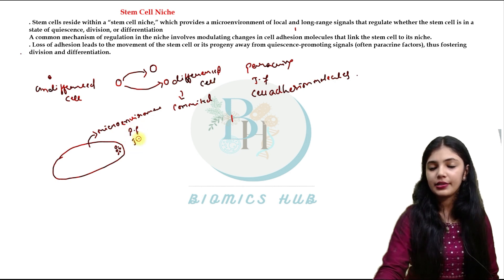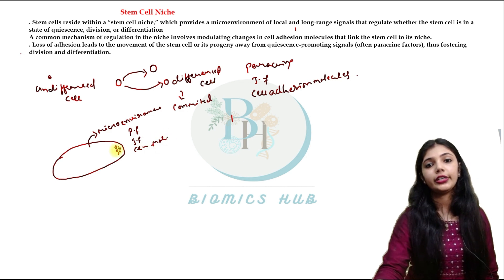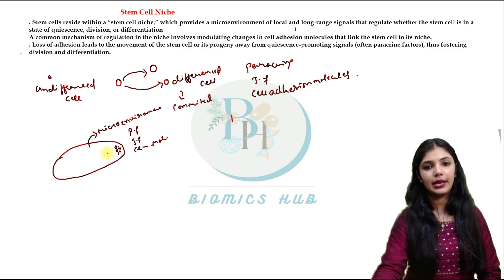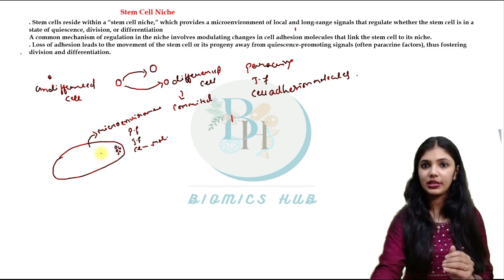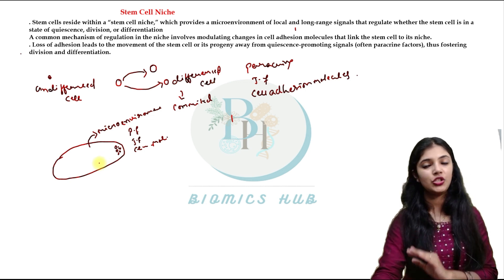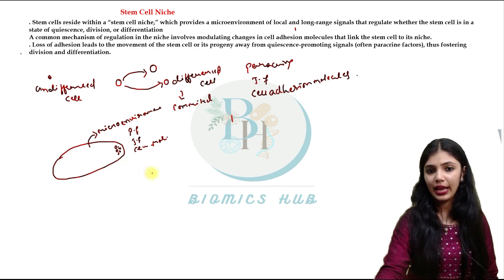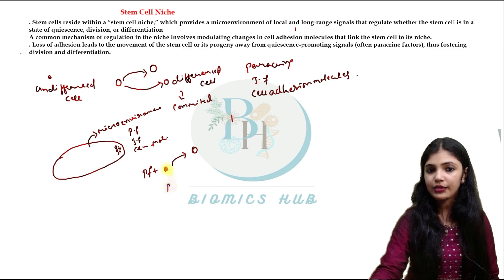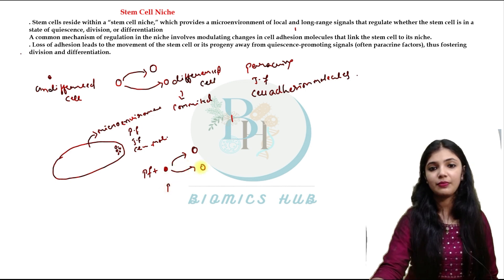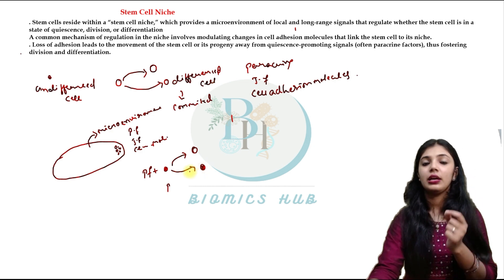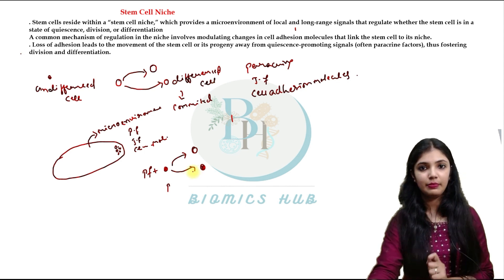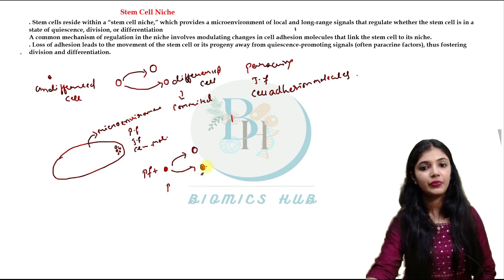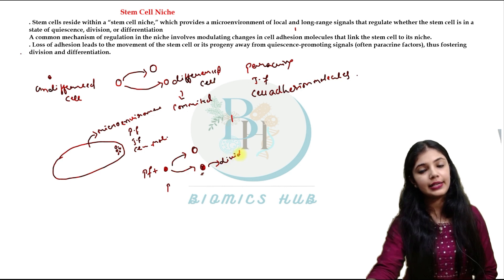The paracrine factors present in contact with the stem cells help them to self-renew. If these paracrine factors — if this cell divides and leaves its niche — due to lack of cell adhesion molecules, if it leaves its niche even a little distance away, then the paracrine factors cannot interact with this cell. Now this cell has the ability to divide itself, and after division it will be in the differentiated form.